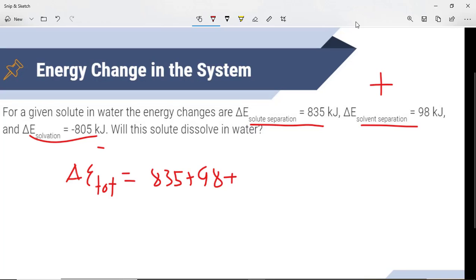We don't change any signs with this. When we plug that into our calculator and solve, we get that the total energy of the system is a positive 128 kilojoules.